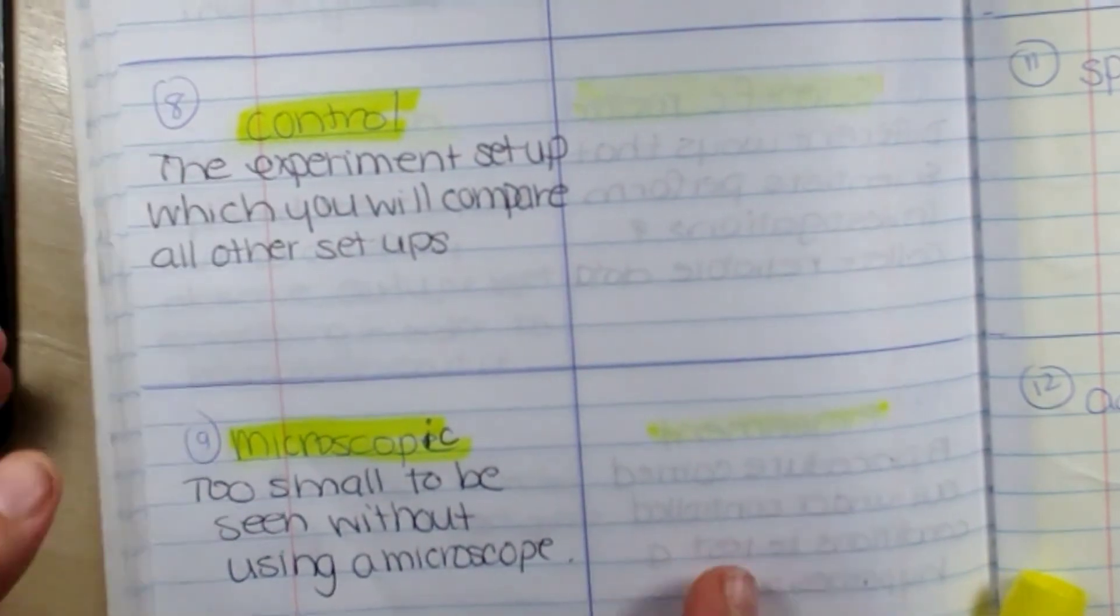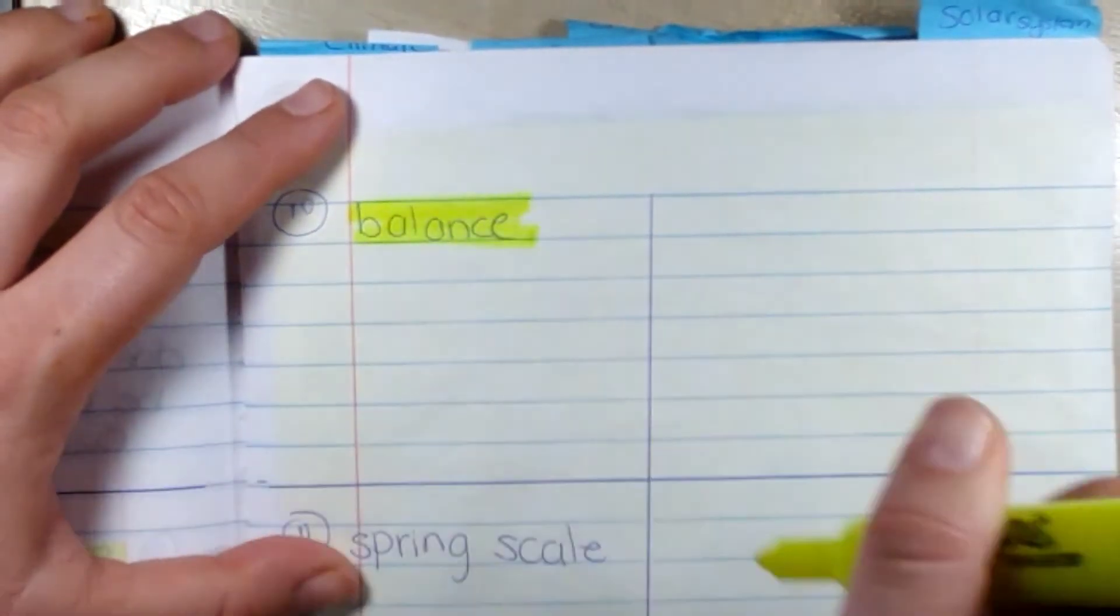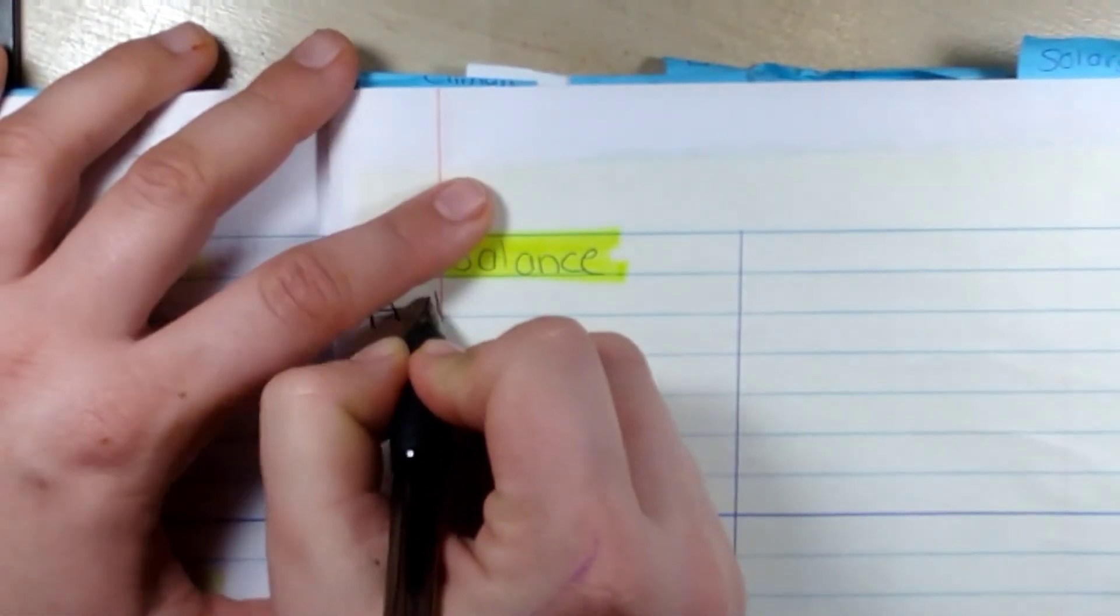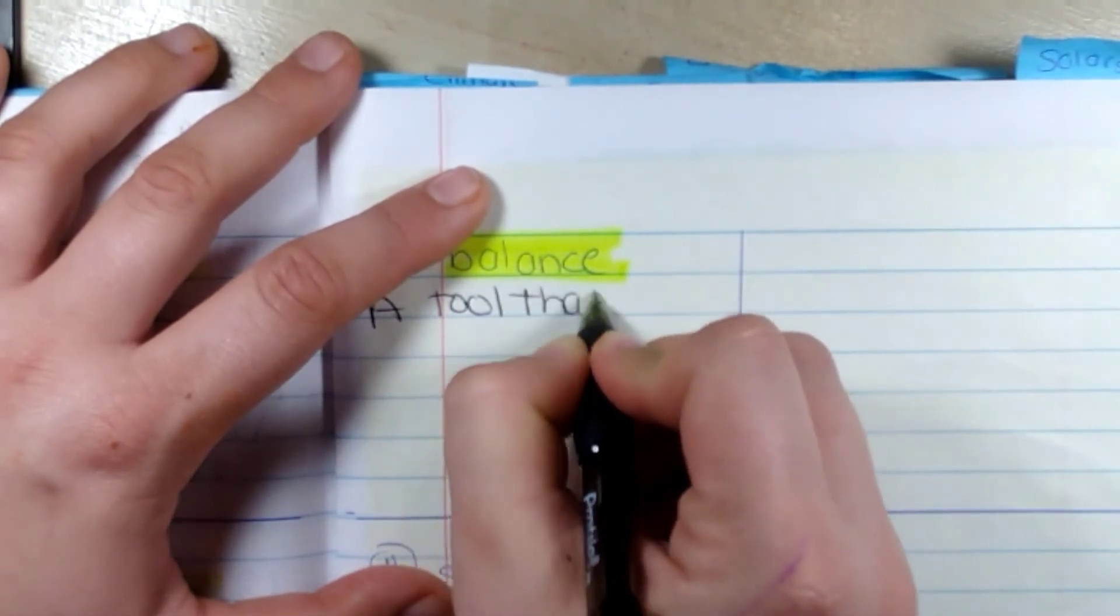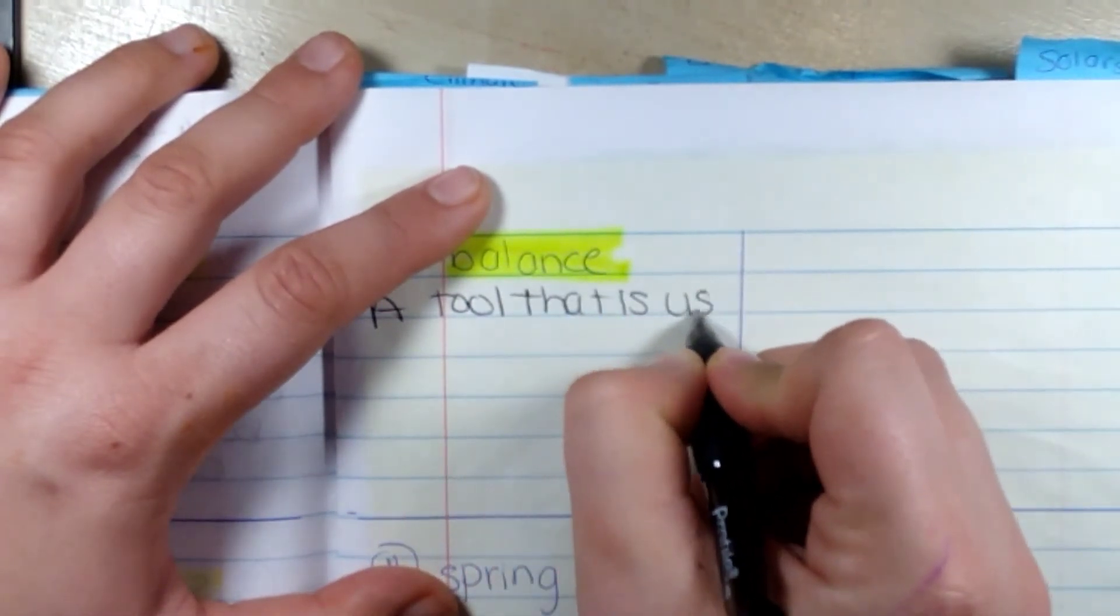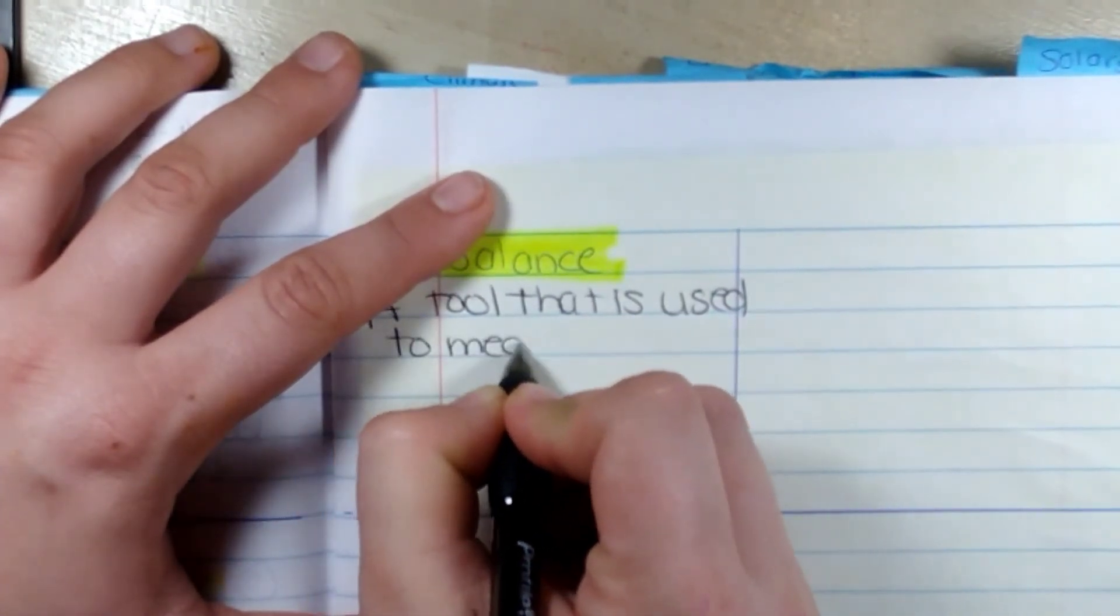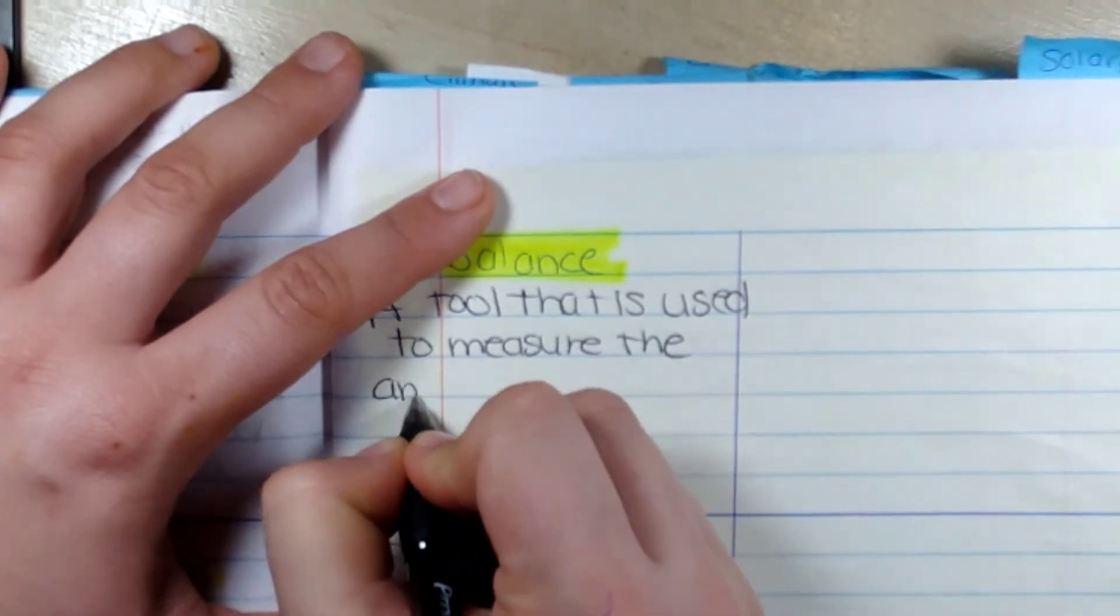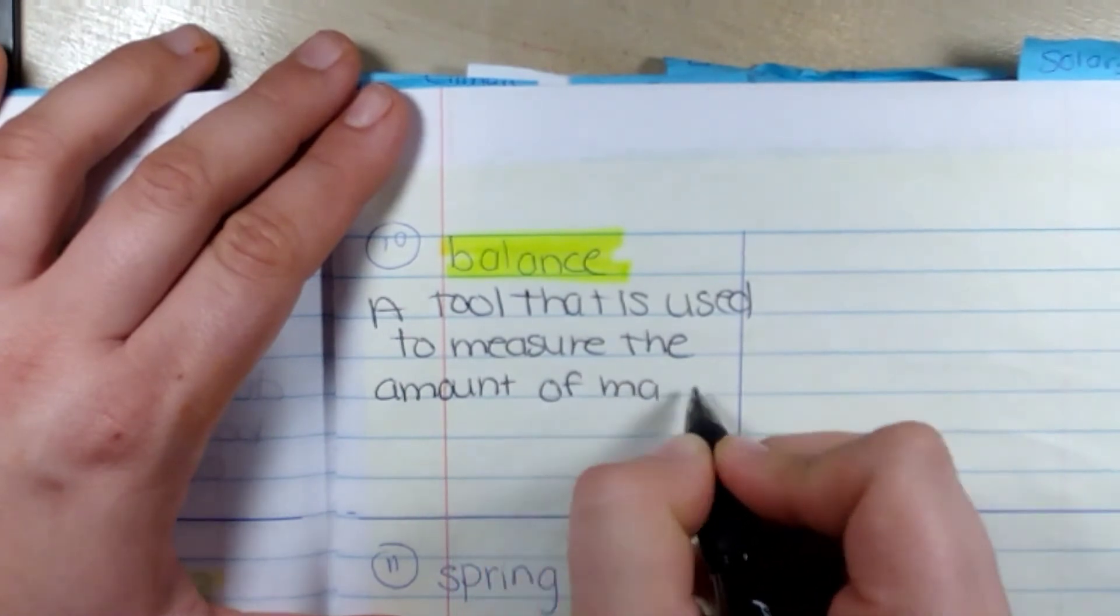Okay. Our next one on the last page is a balance. A balance is a tool used to measure the amount of matter in an object. A balance is the amount of matter in an object, which is the object's mass.